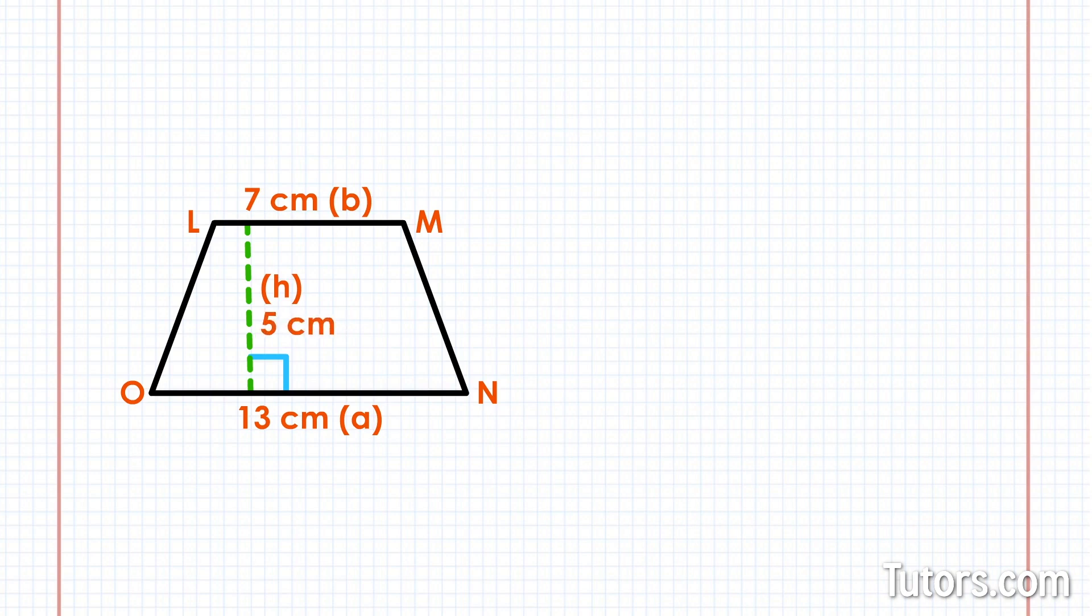First, let's plug these numbers into our formula. Area equals the sum of thirteen plus seven divided by two times five. Next, we add thirteen plus seven and get twenty. Then we divide by two and get ten.